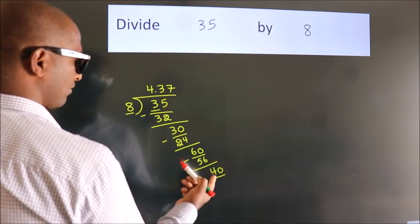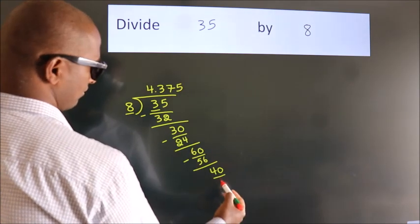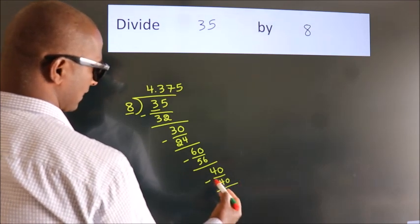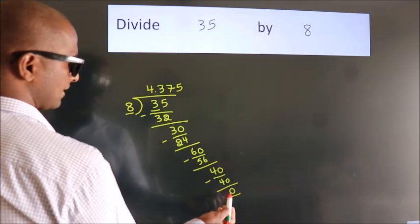When do we get 40? In the 8 table, 8 fives, 40. Now we subtract. We get 0. Here we got remainder 0.